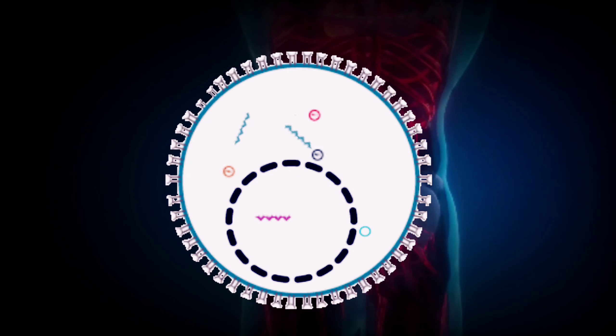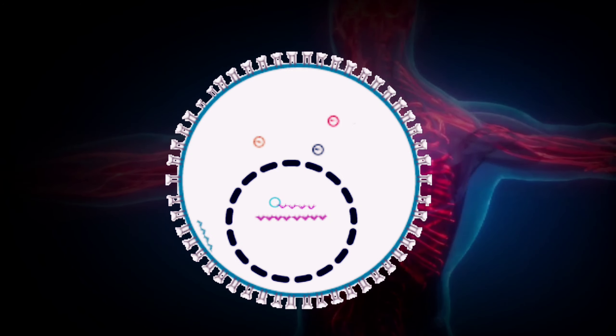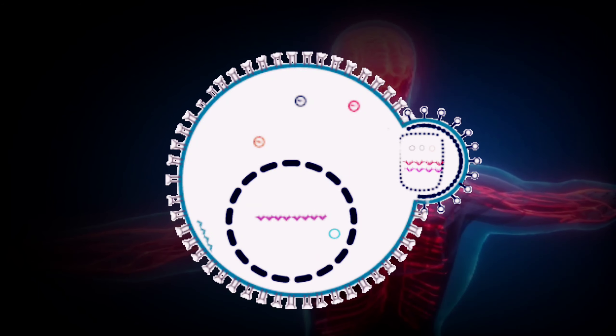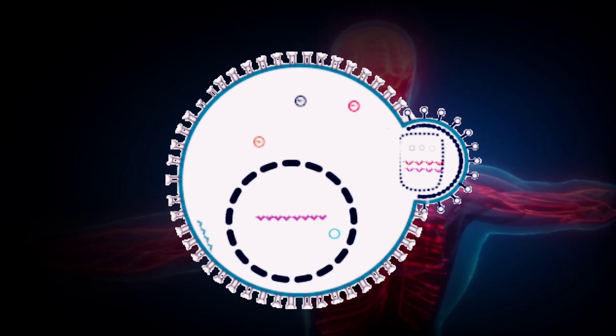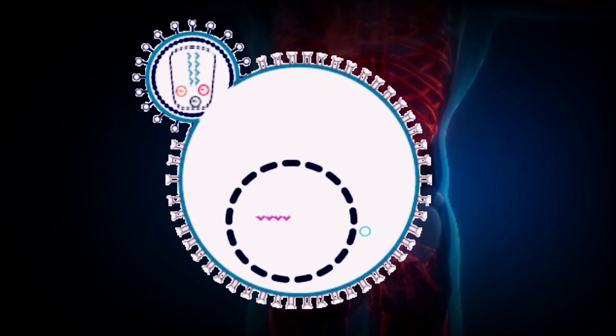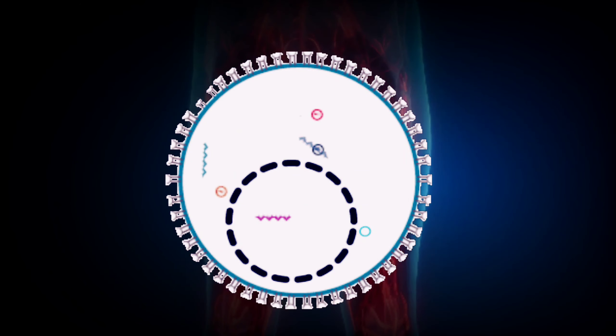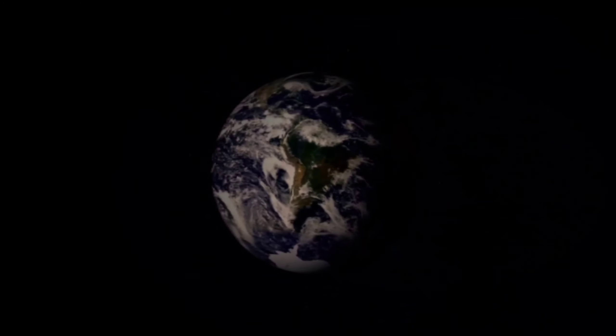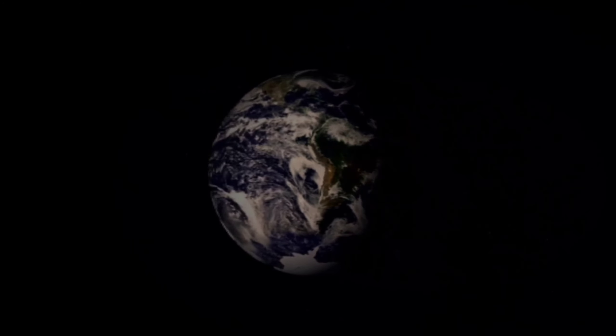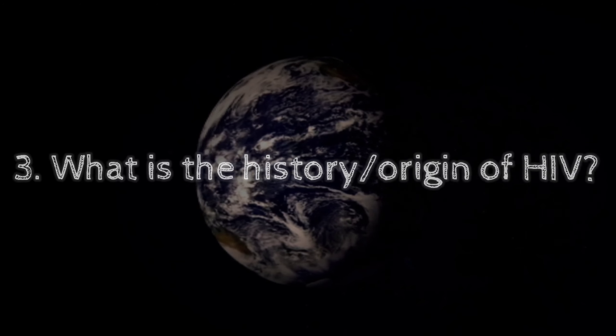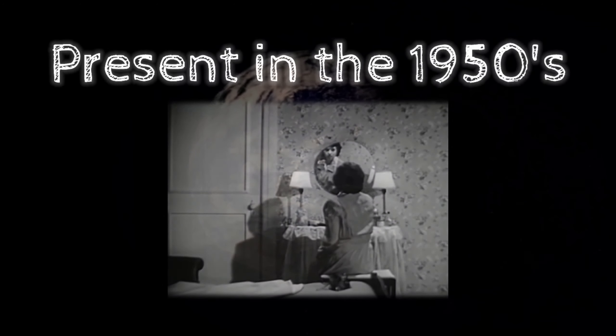Moving on to the second question: How does HIV or AIDS affect the human body? HIV targets and infects the same immune system cells that protect us from germs and illnesses. These cells are a type of white blood cells called CD4 cells. Without medication to control the virus, HIV usually takes over CD4 cells and turns them into factories that produce millions of copies of the virus, damaging the CD4 cells and weakening the immune system. This is how HIV causes AIDS.